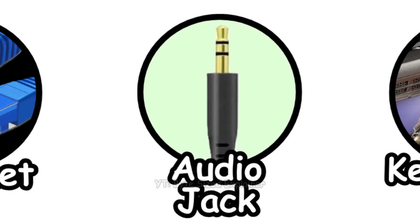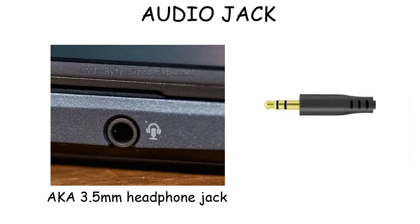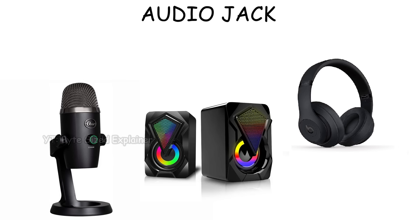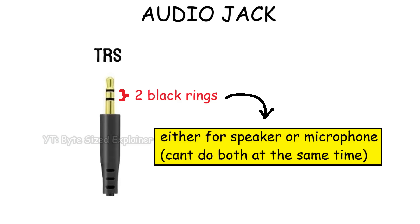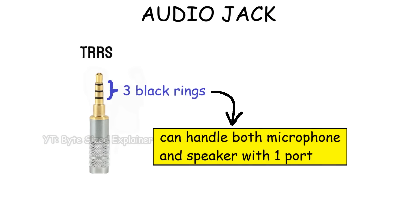The audio jack, often called the 3.5mm headphone jack, is a port used for connecting headphones, speakers, or microphones. In the past, a computer had two jacks — one for sound and one for a mic — because at that time the audio jack was still TRS, meaning it could only handle either a sound signal or a mic signal at a time. But now we have TRRS, which is an audio jack that can handle both output and input.